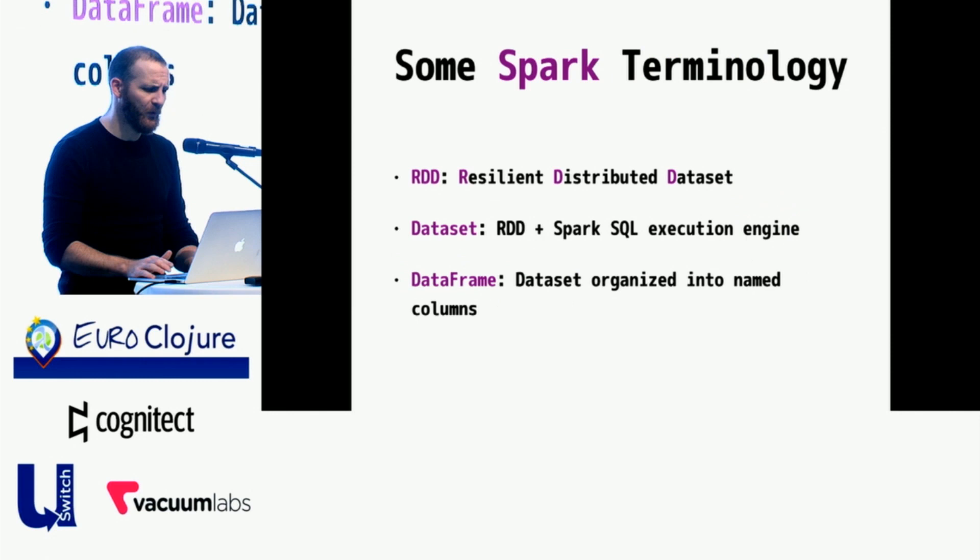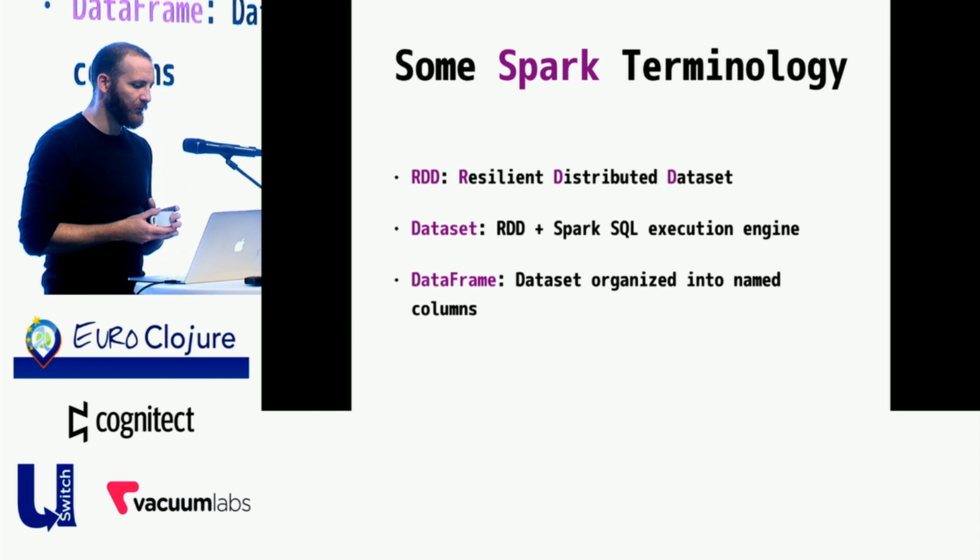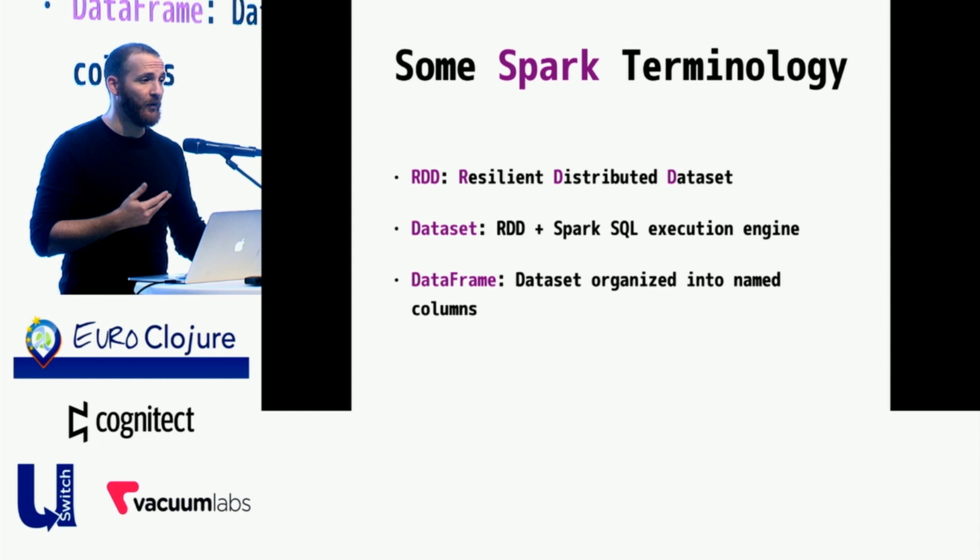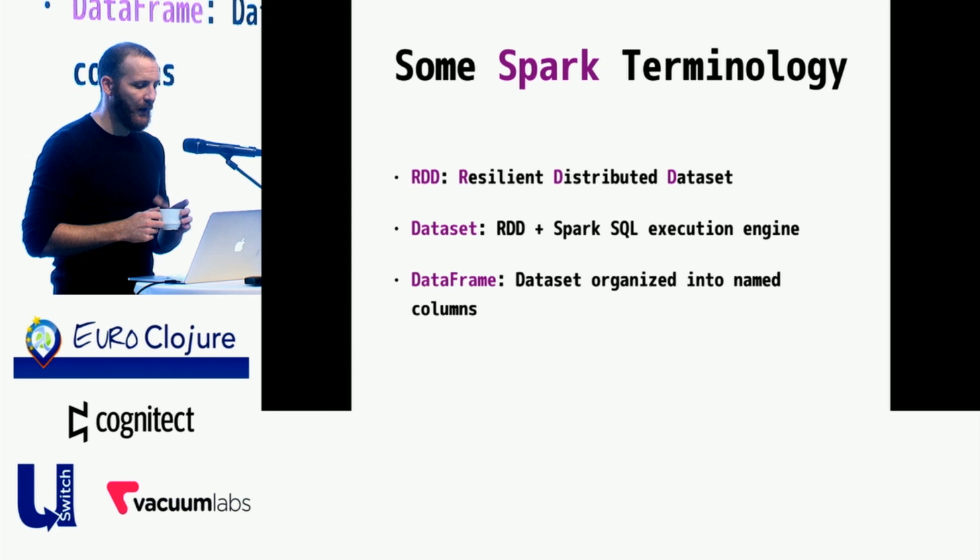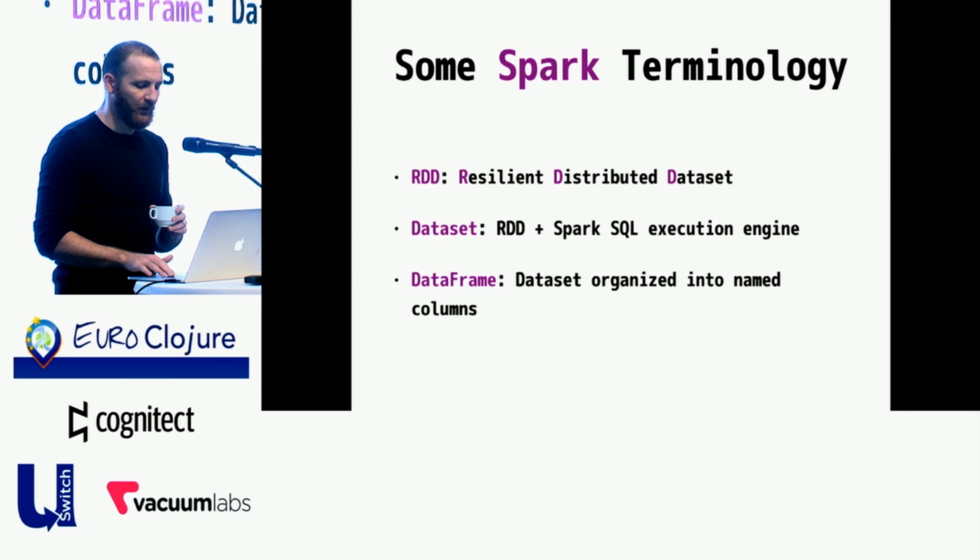There's a little bit of terminology that comes with Spark. The main abstraction is the RDD, the Resilient Distributed Data Set, which is a collection of data that could be on any node in the cluster, hence distributed, and resilient because if data are lost, it's not a problem. Spark can recompute the missing data. There are two JVM objects that are interesting: datasets and data frames. Datasets are RDD and Spark SQL execution engine combined. Data frames are organized data sets that are mapped to named columns. We'll see them in the code to follow, although they run under the hood in Clojure because we don't generally have type information.